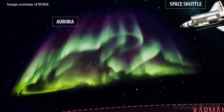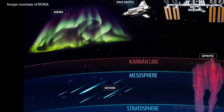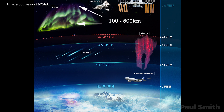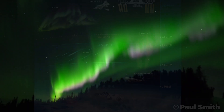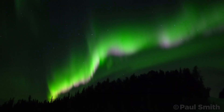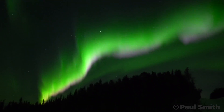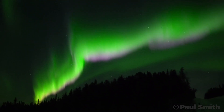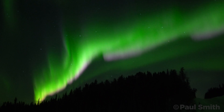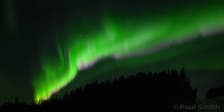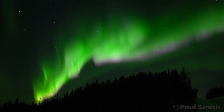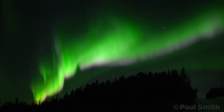The auroras happen way higher in the atmosphere than sprites do — up around 100 to 500 kilometers in altitude, whereas sprites are around 40 to 100 kilometers. In some really strong auroral events you can see pink fringes along the bottom edge of the green aurora, where high energy particles have penetrated deep into the atmosphere and excite nitrogen at that 100 kilometer altitude, right around the top edge of where sprites reach.